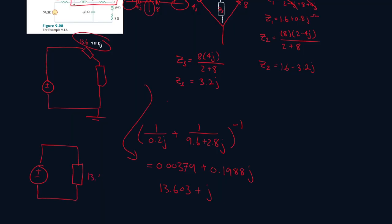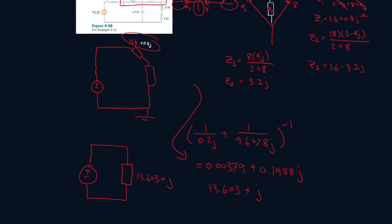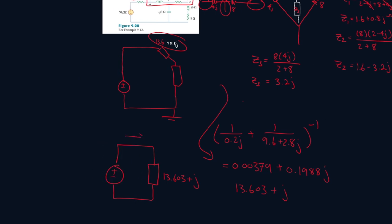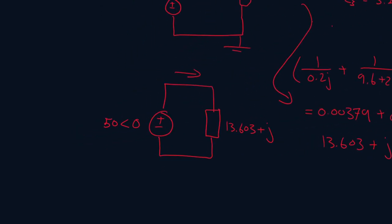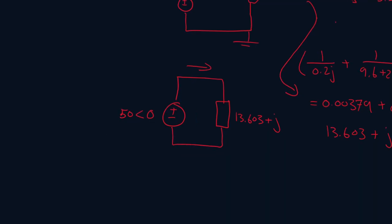We're given the voltage source in phasor format. Let's turn it into real and imaginary numbers, so it'll be 50 cos 0 plus j 50 sin 0. This is just 50 plus 0, so it's pretty much just 50. Now we know V equals I times the impedance.